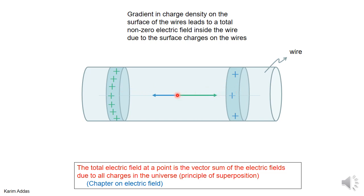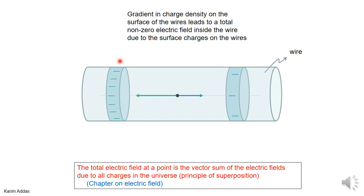Why does a difference in charge density at different locations produce a net electric field inside the wire? Imagine a ring of positive charge with very high charge density, and another ring with lower charge density. The electric field along the axis points outward from each ring, but the higher-density ring produces a larger field. The net electric field inside the wire will therefore point to the right in this case.